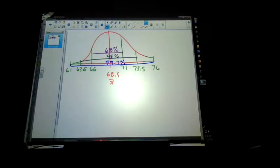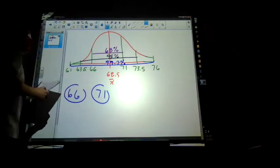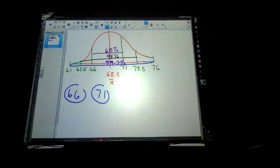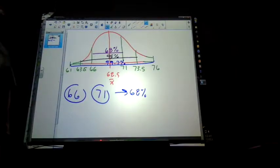Okay, so the first question says draw a normal curve because we have that. What percent of women are between 66 and 71? So what we're going to look at is we want to say between one standard deviation, what percent of women are going to fall between that? And that's going to be 68%. That's one standard deviation either way. 68% of the women in the United States will be between 66 and 71 inches in height.